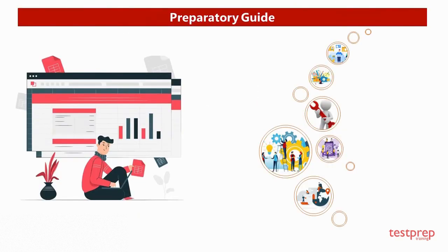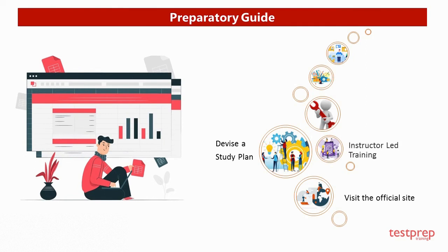Now let us discuss the Preparatory Guide. 1. Visit the official site: familiarize yourself with the exam details in the course domains by referring to the official site of WatchGuard Fireware Essentials. 2. Devise a Study Plan to maintain consistency in your preparations. Start by brushing up your weaker sections and prepare well. 3. Instructor-Led Training: WatchGuard greatly recommends candidates to enroll for their instructor-led training class to get trained with hands-on experience. 4. Refer Self-Study Material: WatchGuard offers courseware that you can use for self-study, providing in-depth understanding of the subject.